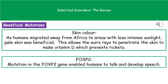Not all of the mutations that have occurred over the years have been problematic — some have been very beneficial to us. The first example is skin color. Originally the human population originated in Africa, where darker skin colors were much more beneficial because the darker the skin tone, the more protection we had from the intense sunlight there.